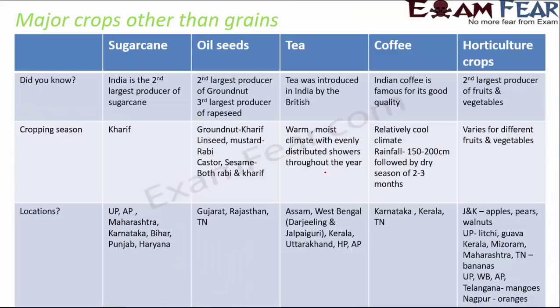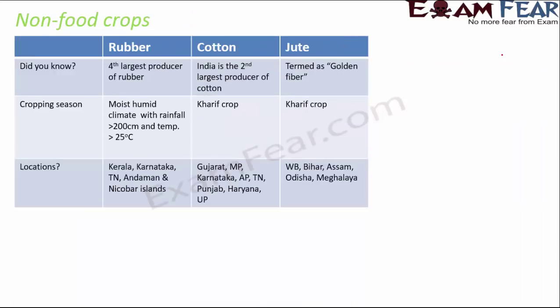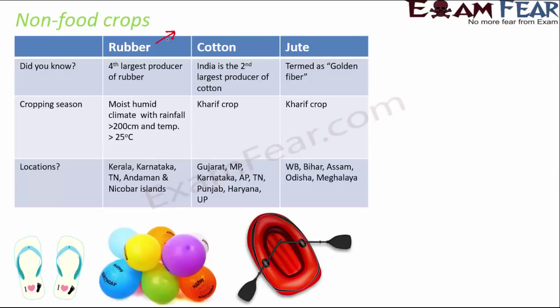That completes our coverage of non-grain crops — sugarcane, oil seeds, tea, coffee, and horticulture crops. Now let's talk about non-food crops. Agriculture not only provides food but also many non-food items. For example, rubber is used for slippers, balloons, and boats; cotton for garments, bed sheets, and curtains; and jute for bags and ropes.